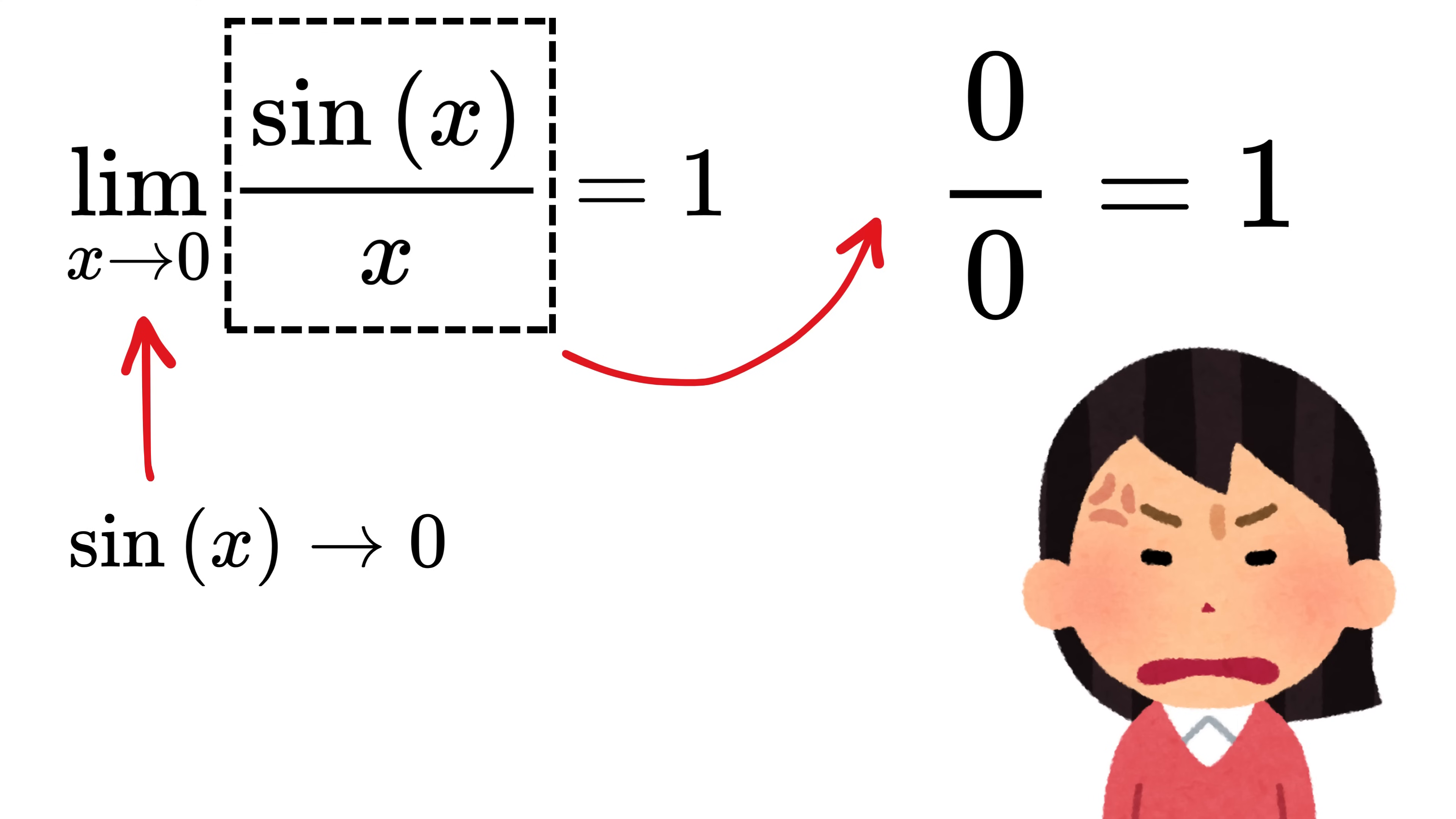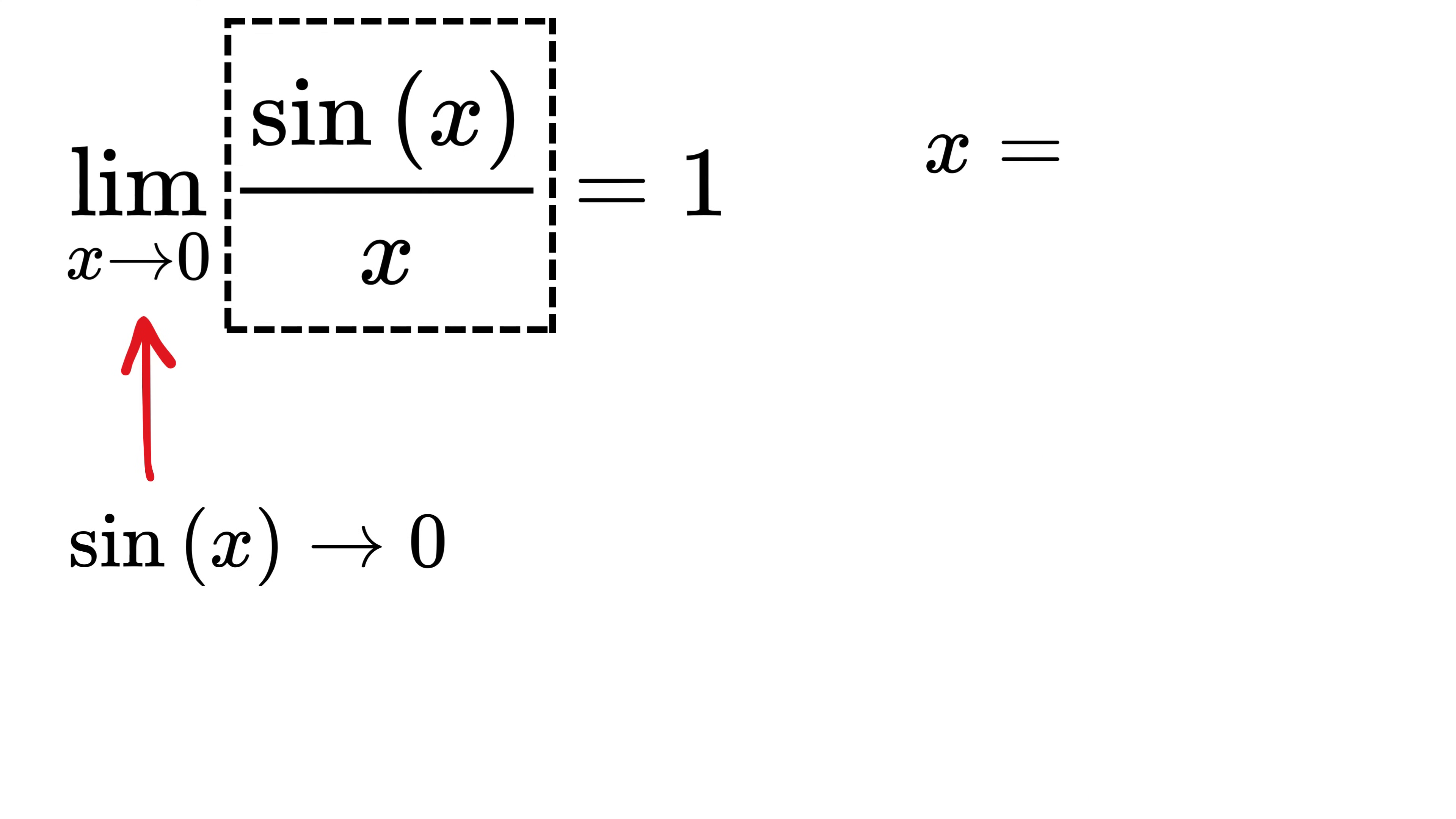So it's like zero divided by zero, and maybe that just somehow gives one. But that's nonsense. Zero by zero doesn't even make sense. Because x is not exactly zero, so we might consider, say, x equals 10 raised to minus 20.